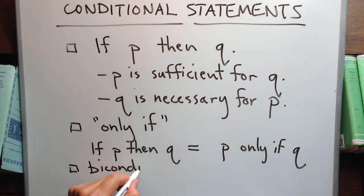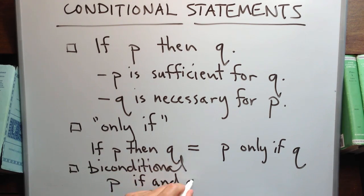If P is both sufficient and necessary for Q, then we use the biconditional and say P if and only if Q.